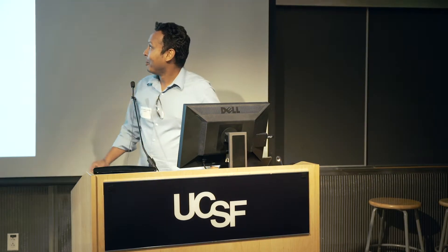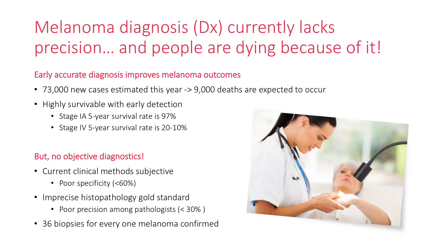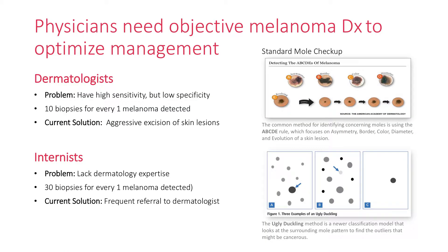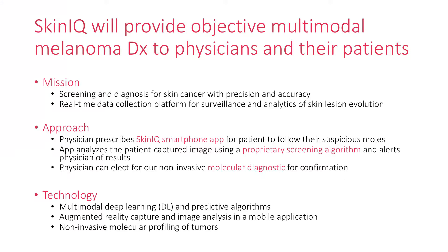We're talking about melanoma. Melanoma is a big problem, as you probably saw from that video. It's the number one killer of young adults. And you would think this is easy to diagnose — it's actually not very easy. We have a dermatologist on our team and she could tell you there's poor specificity, about 60% for diagnosing melanoma, and a fair number of imprecision. 36 biopsies are performed for every melanoma confirmed on skin check.